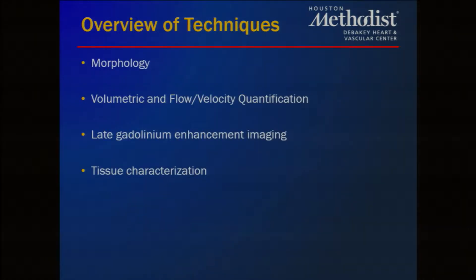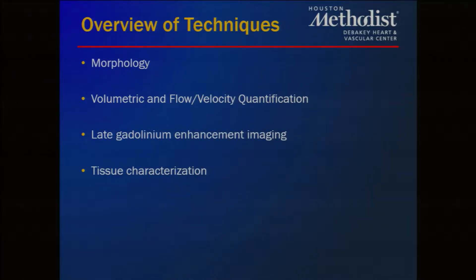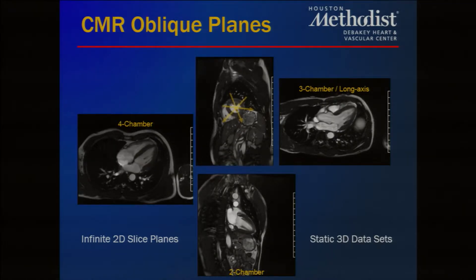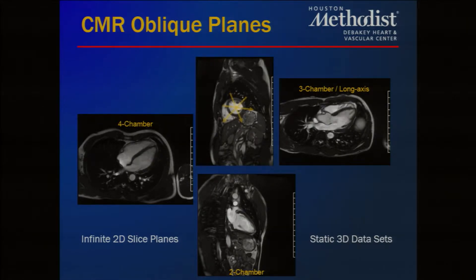I'm going to go over a brief overview of techniques looking specifically at what cardiac MRI can offer morphologically, volumetric and flow velocity quantification techniques, late gadolinium enhancement imaging techniques, and tissue characterization. The nice thing about CMR is that we can look at anything in any plane we want, reproducing the cardiac views including four-, three-, two-chamber and short axis views.